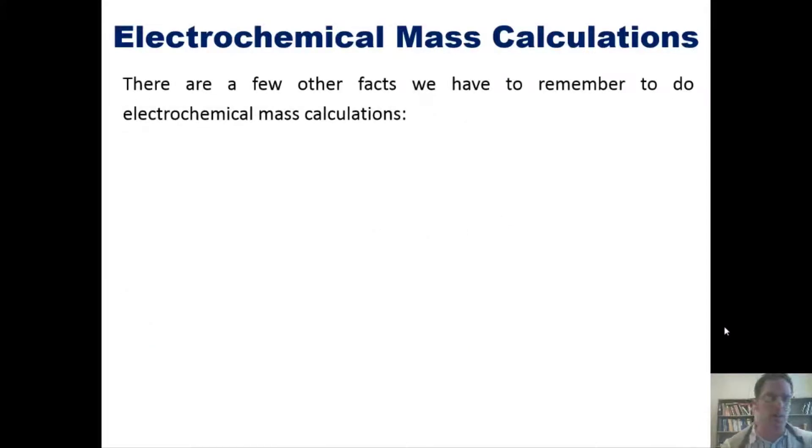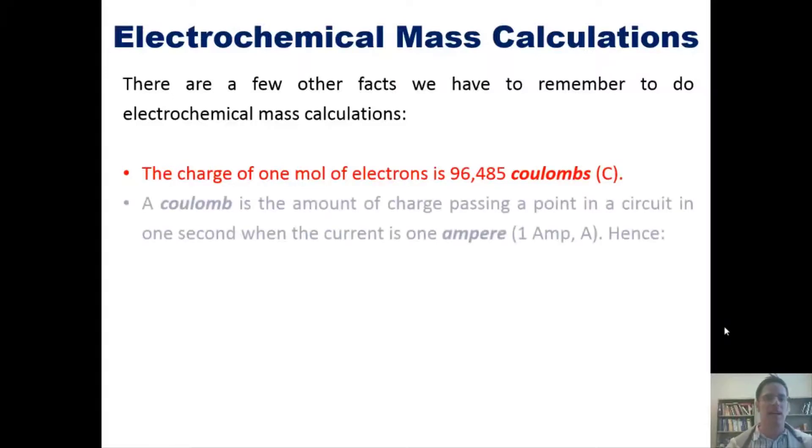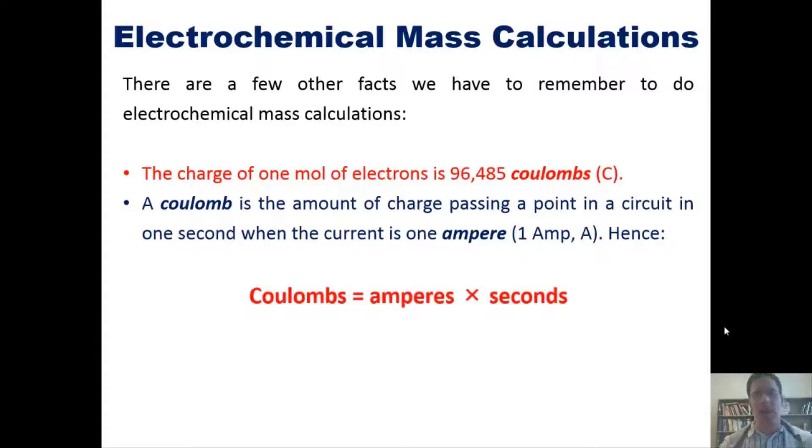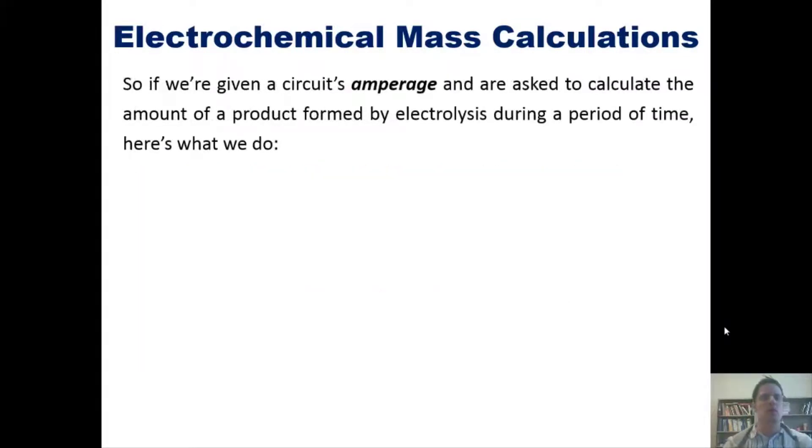So there are a few other facts that we have to remember to do electrochemical mass calculations. First, the charge of one mole of electrons is 96,485 coulombs. Second, a coulomb is the amount of charge passing a point in a circuit in one second when the current is one ampere or one amp, abbreviated as a capital letter A. Hence coulombs is the amount of charge passing a point in a period of time.